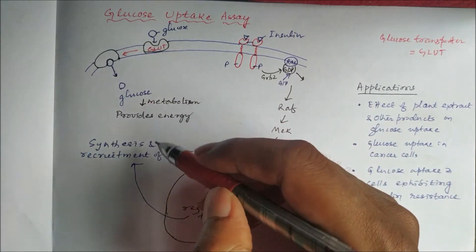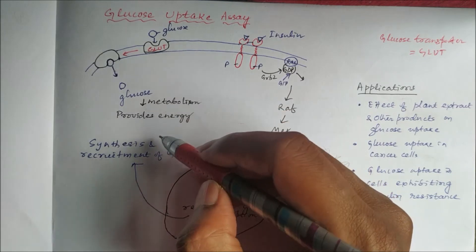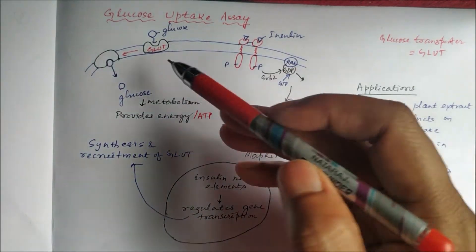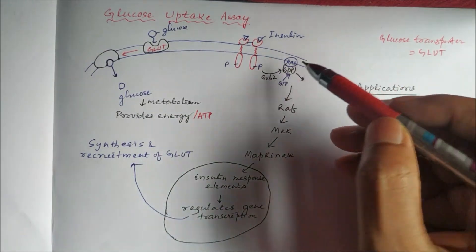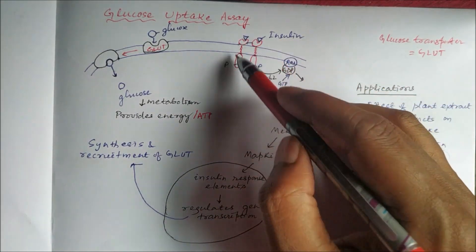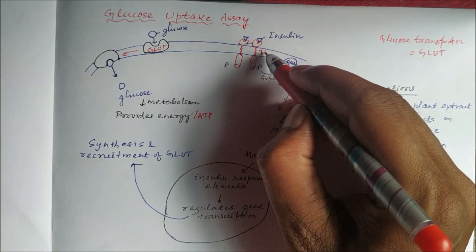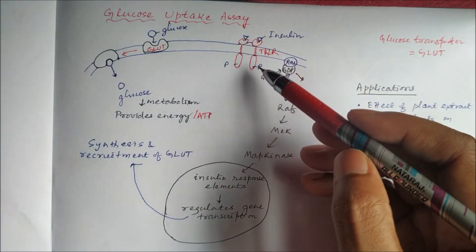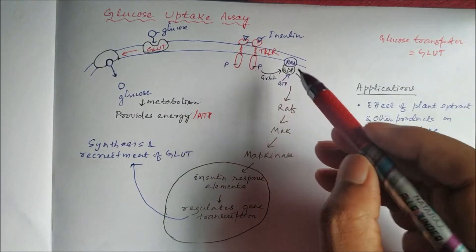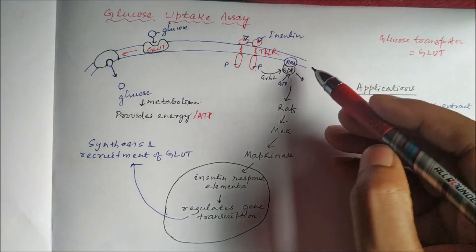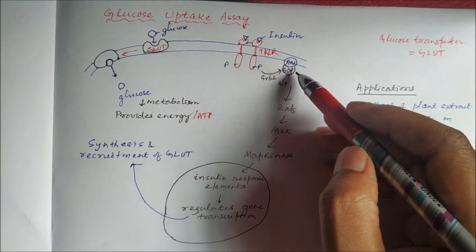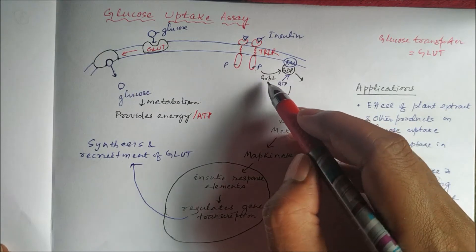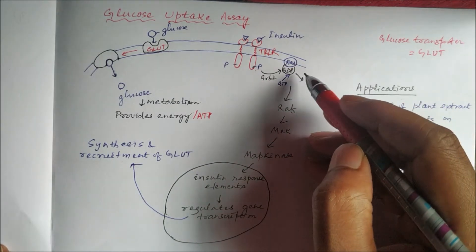By glycolysis and the Krebs cycle, glucose provides ATP or energy. The GLUT transporter is synthesized and recruited on the cell membrane by insulin. The insulin receptor is a tyrosine kinase-linked receptor which follows the Ras-Raf pathway. When two insulin molecules bind, there is auto-phosphorylation of the beta subunit (the tyrosine kinase unit), and that phosphate is transferred to Ras, which is bound to GDP (guanosine diphosphate), via the growth factor receptor-bound protein — a GDP-GTP exchange protein — so GDP is exchanged with GTP.